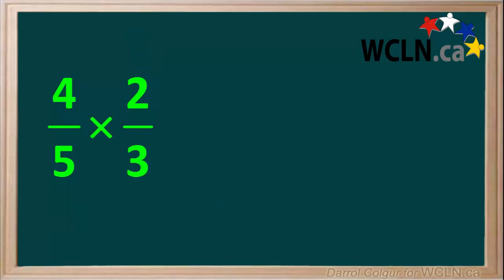So we just have the two fractions 4 fifths times 2 thirds. We make the product of these into a new fraction like this. Now we multiply the two numerators and put this into the numerator of our new fraction. And we multiply the two denominators and put this into the denominator of our new fraction like this.